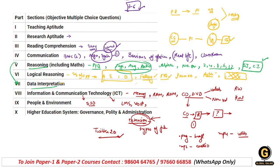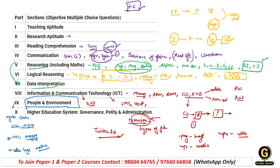Ab aata hai People Development and Environment unit. Ismein aap logon se basic protocols ke questions puche gaye the. Sabse pehla question as expected Kyoto Protocol se tha - important dates puche gaye. SDG yaani Sustainable Development Goals aur Millennium Development Goals pucha gaya tha. NITI Aayog pucha gaya tha. Solar energy pucha gaya tha. Montreal Protocol pucha gaya tha. Is unit se bahut saare questions puche ja rahe hain. Ek expected topic - water diseases, yaani paani ke wajah se kaun kaun si beemaariyaan ho sakti hain. Arthquake se related bhi kuch aa sakta hai - uske baare mein sab padhkar jaiyega.